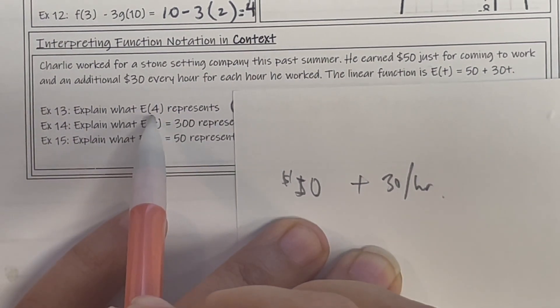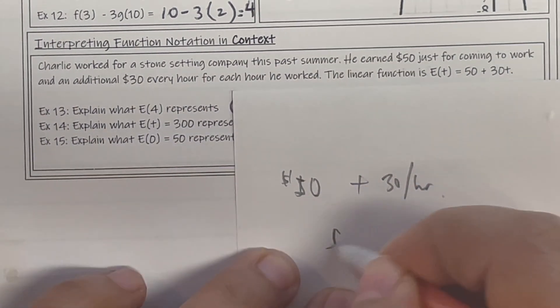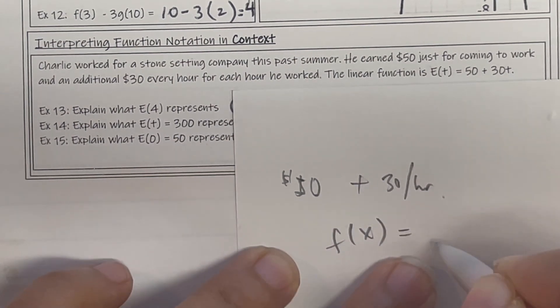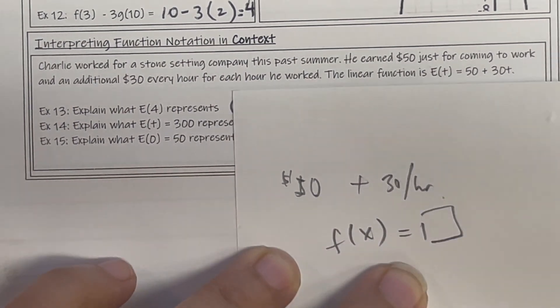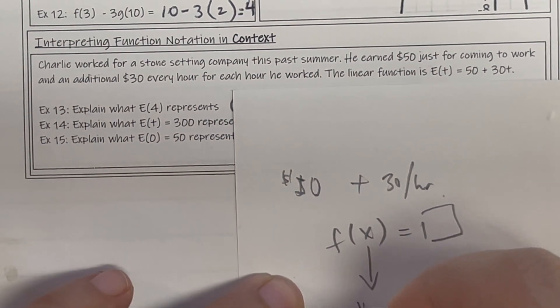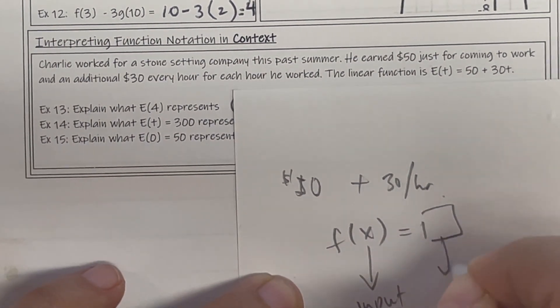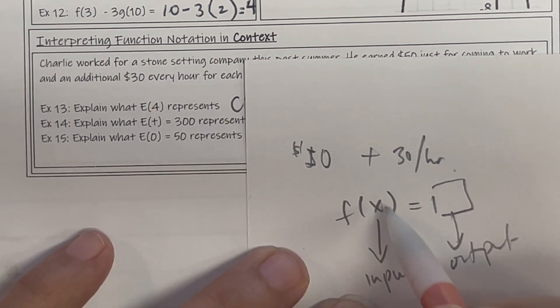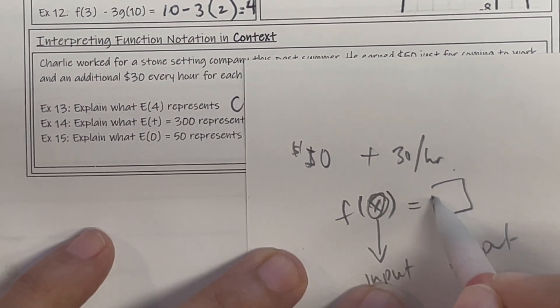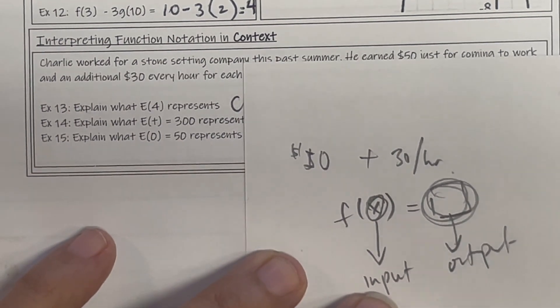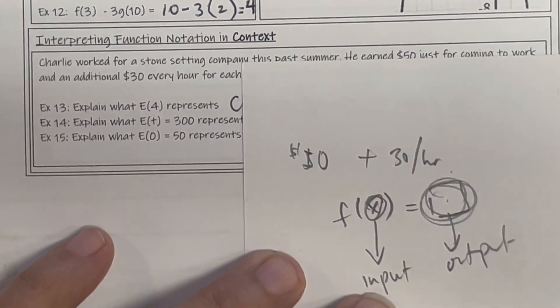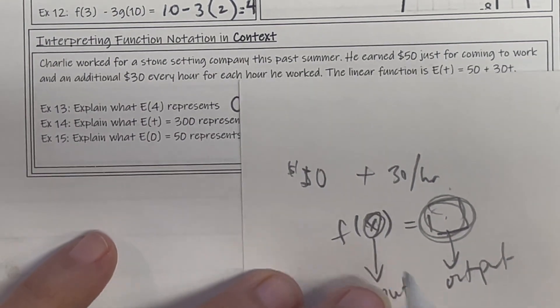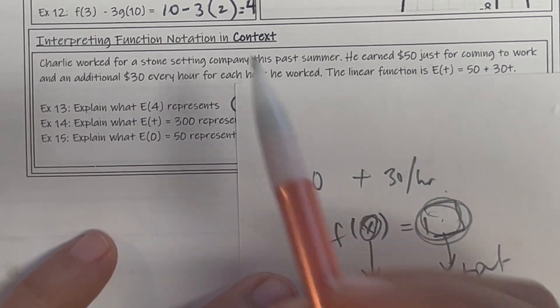The question is, explain what E(4) represents. So whenever you see function notation, you're going to see something like this equals some number. What you need to know is that this is your input and that is your output. Whatever you're putting in goes here, whatever you get out goes here. So I'm putting in my time, I'm getting out money.